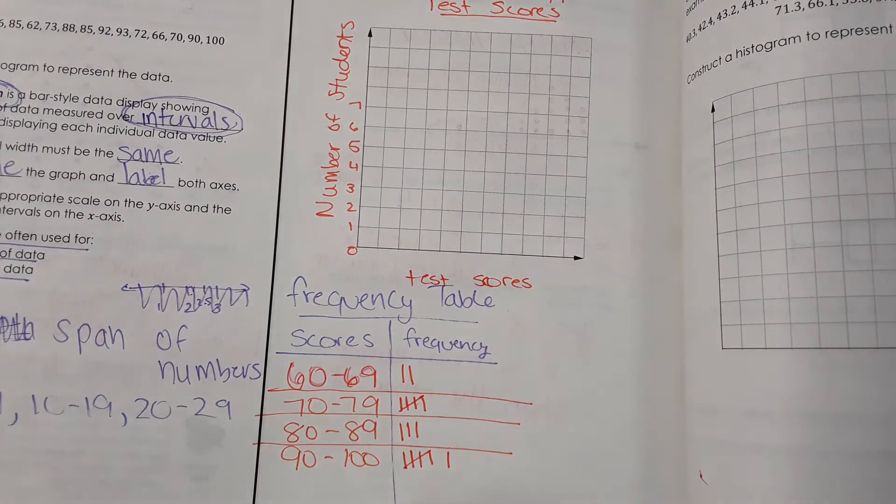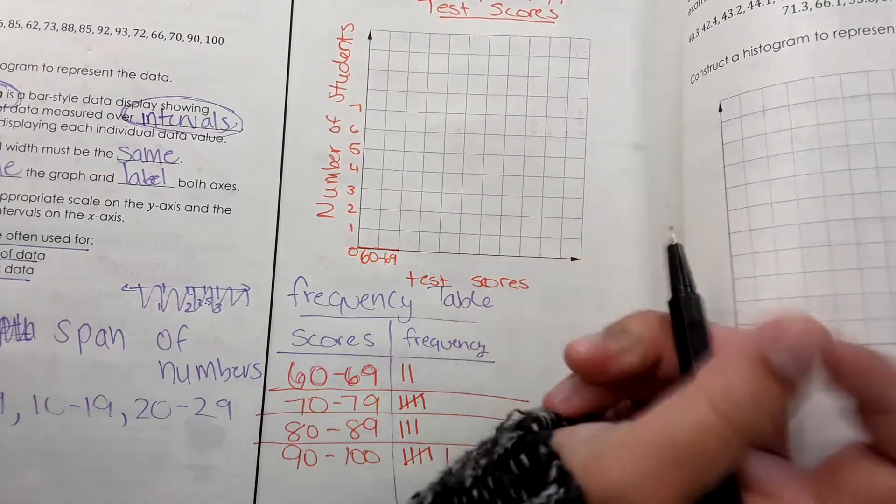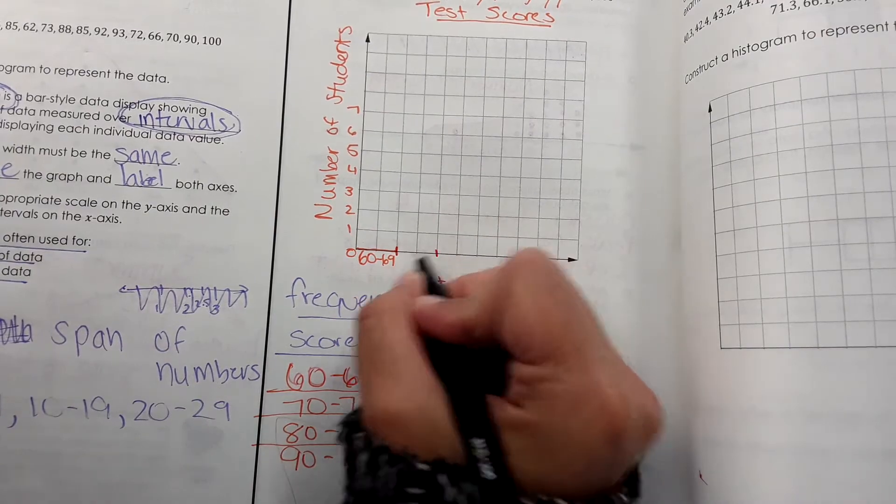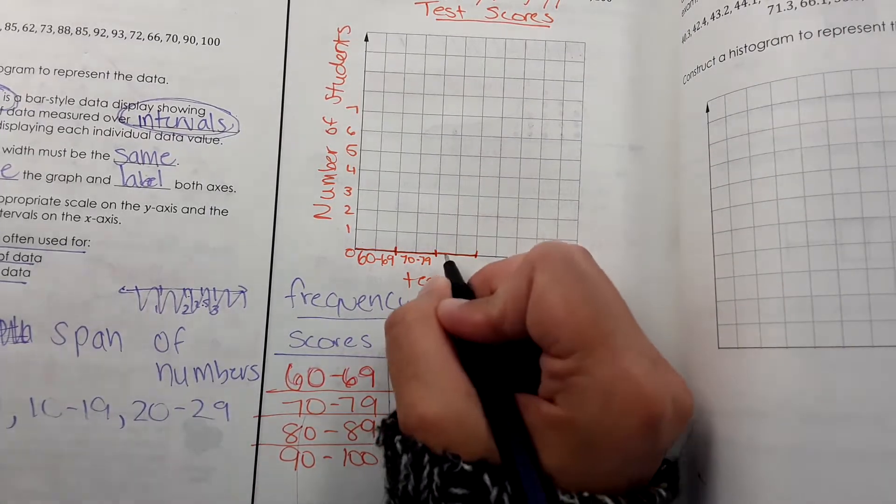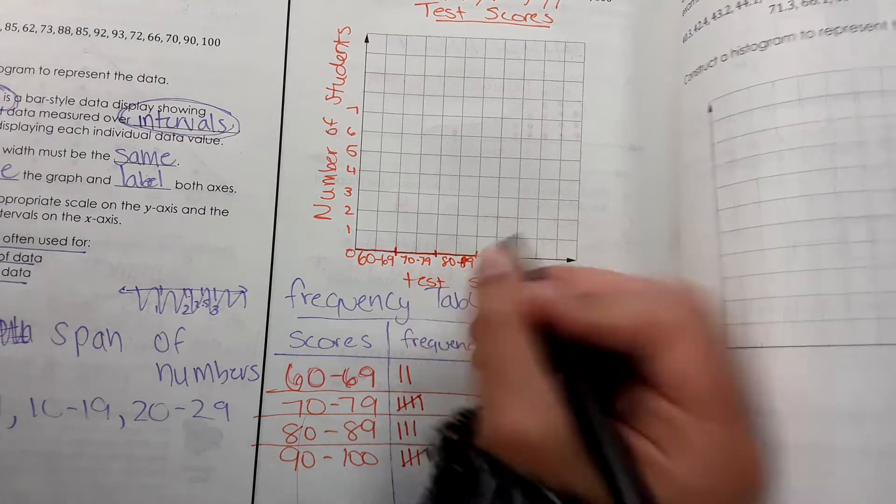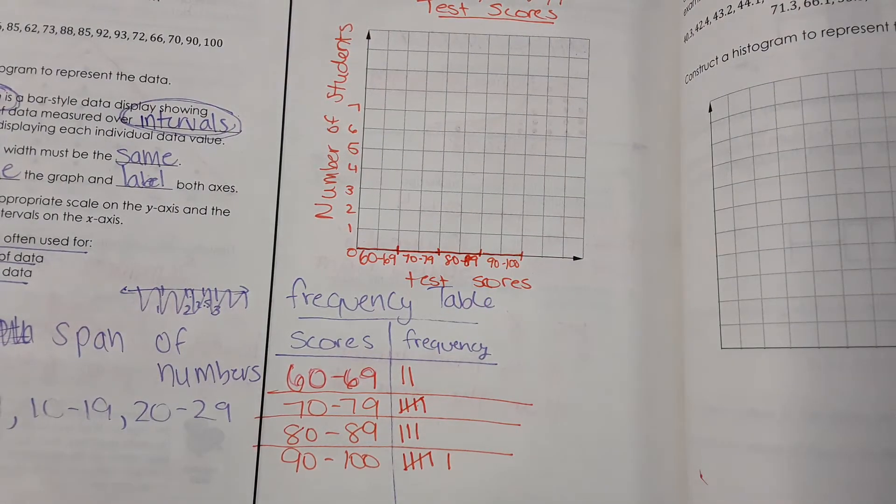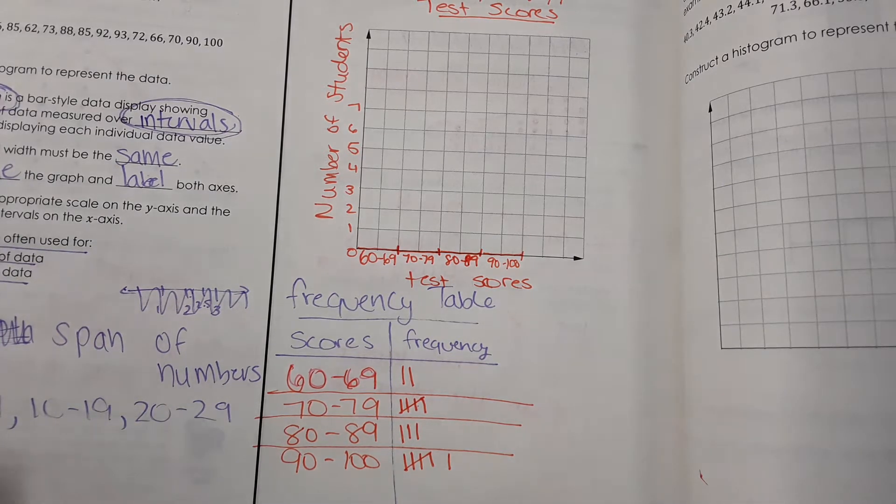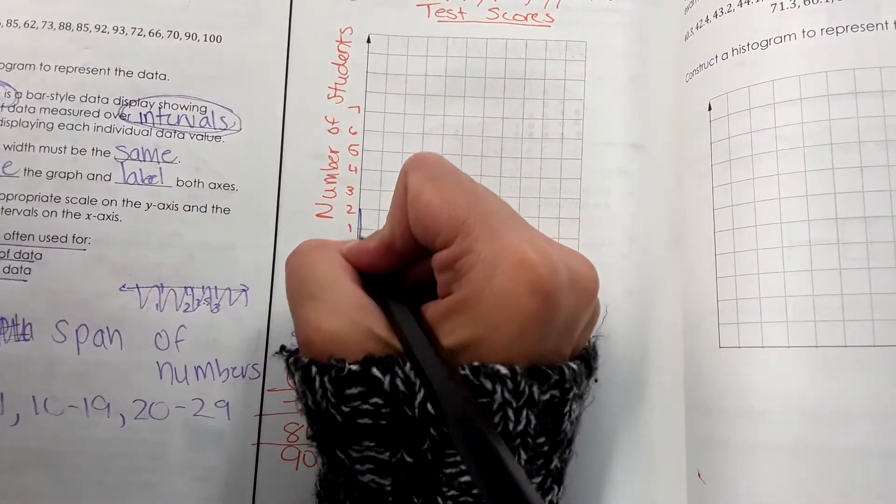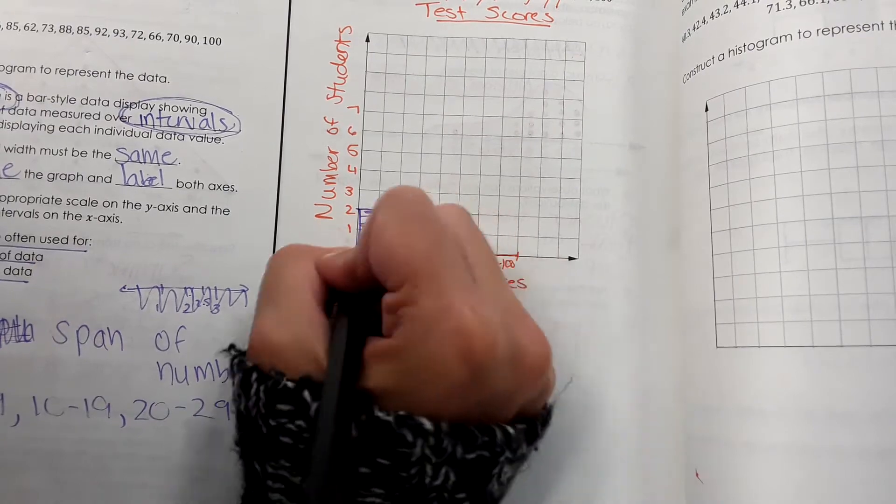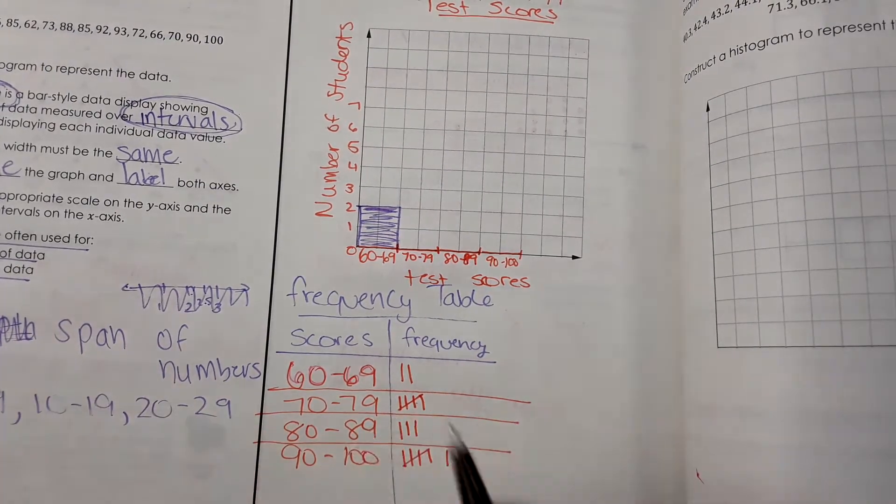And then the test scores are going to go down here. So right here is going to be, they scored from 60 to 69. They'll go there. And then in this bar, it'll be the scores from 70 to 79. And then from 80 to 89 is here. Okay. So this is going to look like a bar graph. In my frequency table, I have two students that fell in the 60 to 69 category. So I'm just going to make my bar up to two. Then the 70 to 79 category is five students.